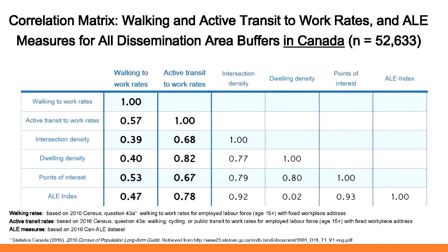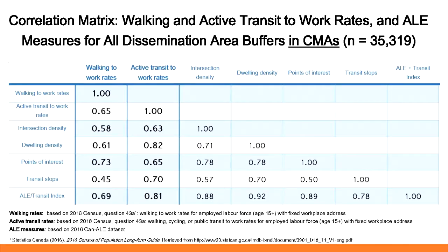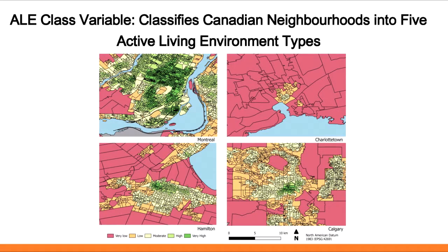The ALE index, available for all of Canada, is well-suited to research: it is correlated with walking to work rates and strongly correlated with active transit to work rates — walking, cycling, or transit use to work — across Canada. Looking at a correlation matrix for the big cities in Canada (CMAs), the correlations with walking to work rates and active transit to work rates are strong. The ALE class variable for four different urban areas — Montreal, Charlottetown, Hamilton, and Calgary — shows neighborhoods shaded from very low favorability active living environment in red to very high in dark green, with a lot of dark green in Montreal.